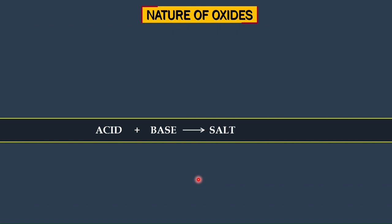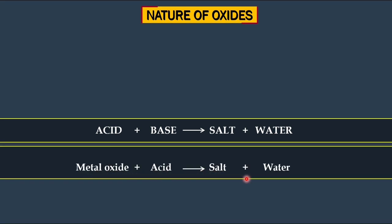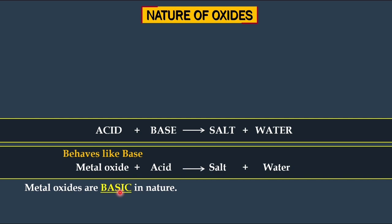Now let us see the nature of oxides — they can be acidic, basic, neutral, or amphoteric. When an acid and a base react, they form salt and water; this is called a neutralization reaction. Metal oxide plus acid gives salt plus water, so metal oxides behave like bases. The nature of metal oxides is basic — except aluminium oxide and zinc oxide; all other metal oxides are basic.